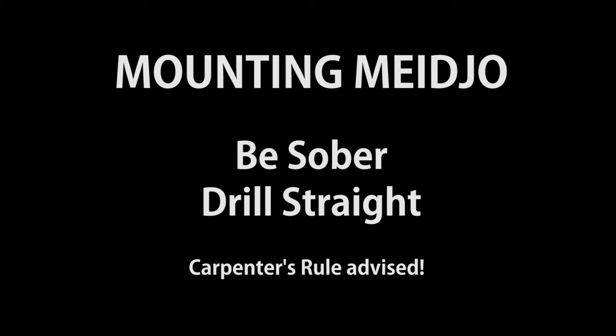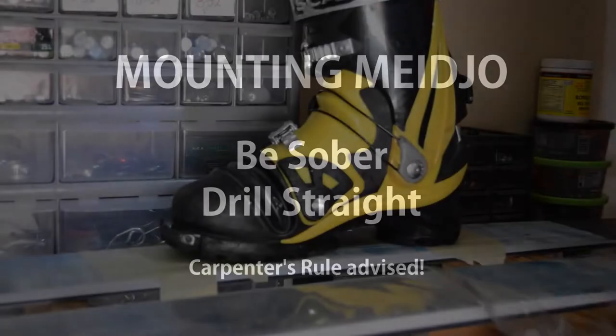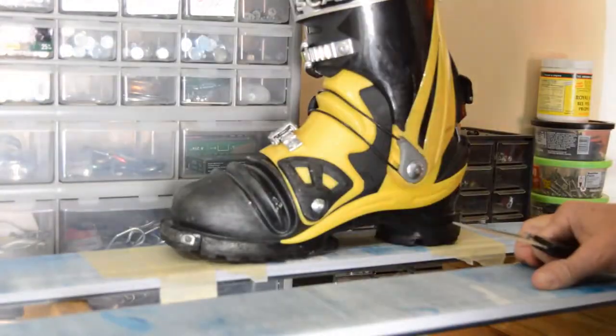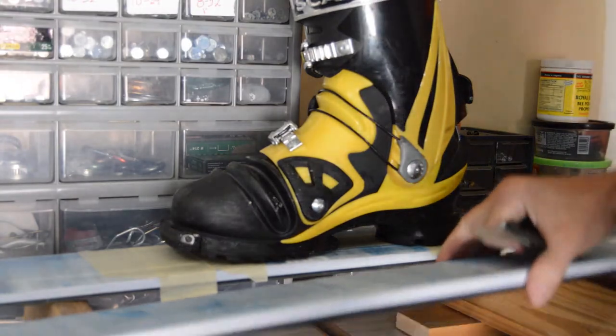Craig Dostey here to share some tips on mounting Maja with the Tally Tribe. You want to be sober when you're doing this because you're going to be putting 13 holes in each ski, and the carpenter's rule is absolutely advised.